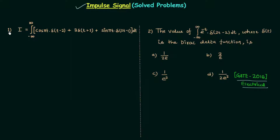Let's start the solution of the first problem. Here integration is given having the range minus infinity to infinity. Whenever we are integrating impulse signals we always focus on the range of integration, because sometimes the impulse is outside the range and in that scenario the integration gives us zero. For example, if the range were minus one to one, then delta(t-2) would be outside the range and that term would become zero. Since both problems have the range minus infinity to infinity, all impulse signals are always included and we can directly follow the rules.